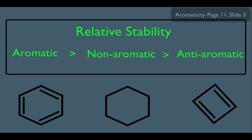And remember, what it means to be aromatic is number one, the uninterrupted cyclic pi cloud. Two, an odd pair of pi electrons.